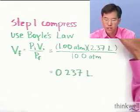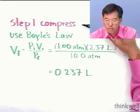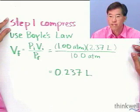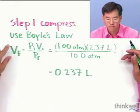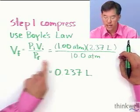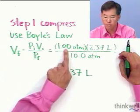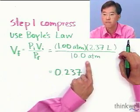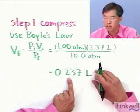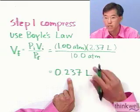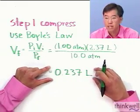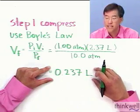Let's imagine first that we're going to compress at fixed temperature — compress at 25 degrees Celsius, the initial temperature. We can use Boyle's Law. Plugging in the initial pressure, the initial volume, and the final pressure gives us a final volume. Remember, this is not the truly final volume because we're doing this in two steps — this is an intermediate final volume that we'll use in the next step.